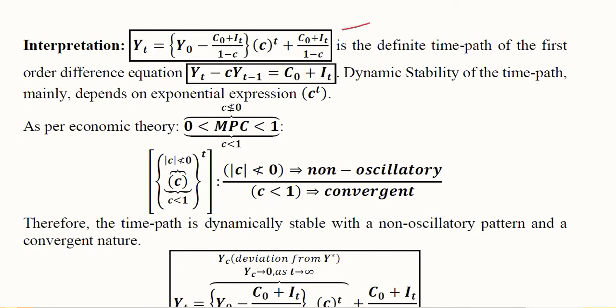This is the time path. It is definite because we don't have any arbitrary constant—we've quantified it using the given initial condition. This was the first-order difference equation we developed. Ideally, to keep subscripts at par with standard form, we should adjust the indices, but the coefficients and constants remain the same.